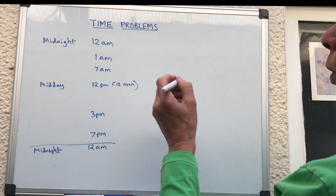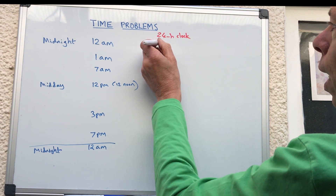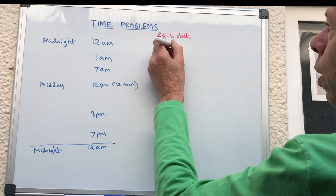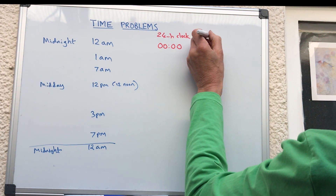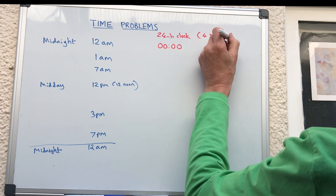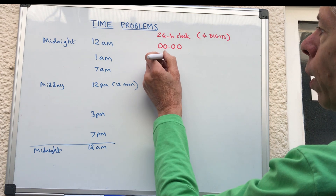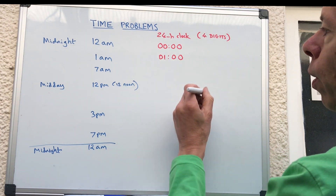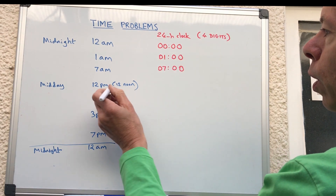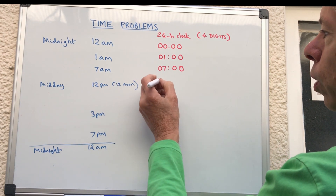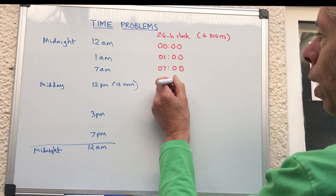In the 24-hour clock, midnight — when the day starts — is 0000. The 24-hour clock has to have four digits; you can't just put a zero. So 1 a.m. would be 0100, and 7 a.m. would be 0700.